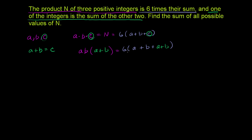And then what does this simplify to? So on the right-hand side, we have 6 times a plus b plus a plus b. This is the same thing as 6 times 2a plus 2b. And we can factor out a 2. This is the same thing as 12 times a plus b. The left-hand side is still ab times a plus b. So ab times a plus b has got to be equal to 12 times a plus b.